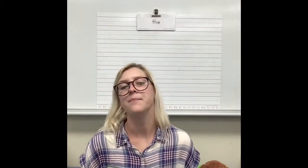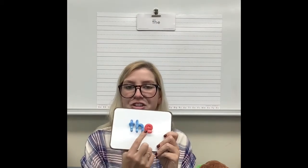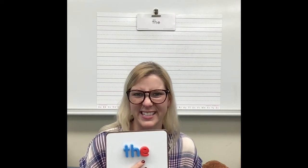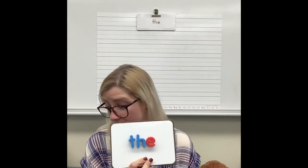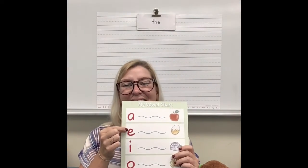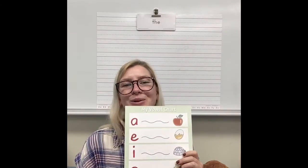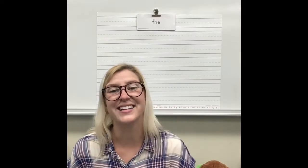This is the word 'the.' We need T, H, E to spell 'the.' Spell it with me — let's spell it like a scary monster: T, H, E — the. Can you find the vowel in the word 'the'? E! Remember the vowels are red. The only vowels that we have are A, E, I, O, and U. The word 'the' has the vowel E in it.